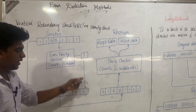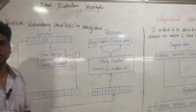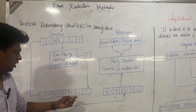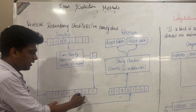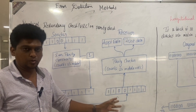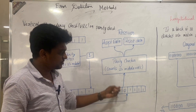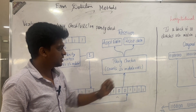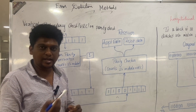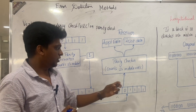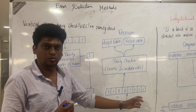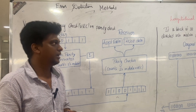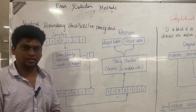Since the count is odd, we add one extra bit to make the total number of ones even. This original data plus the redundant bit is sent to the receiver. The receiver counts the number of ones in the data plus the VRC bit. The parity checker then decides to accept or reject the data. If the number of ones is even, the data is accepted; otherwise it is rejected. This is a single-dimensional method.